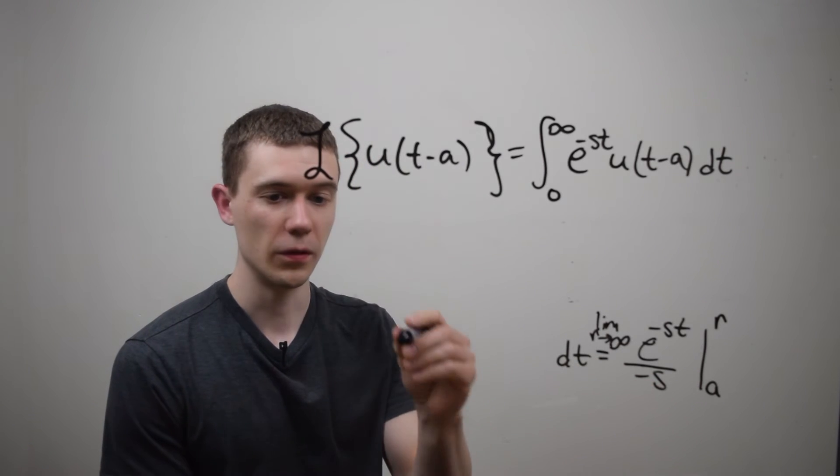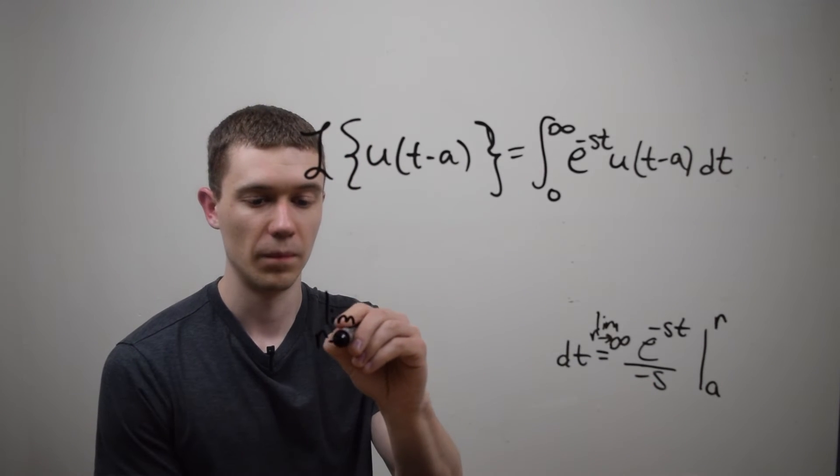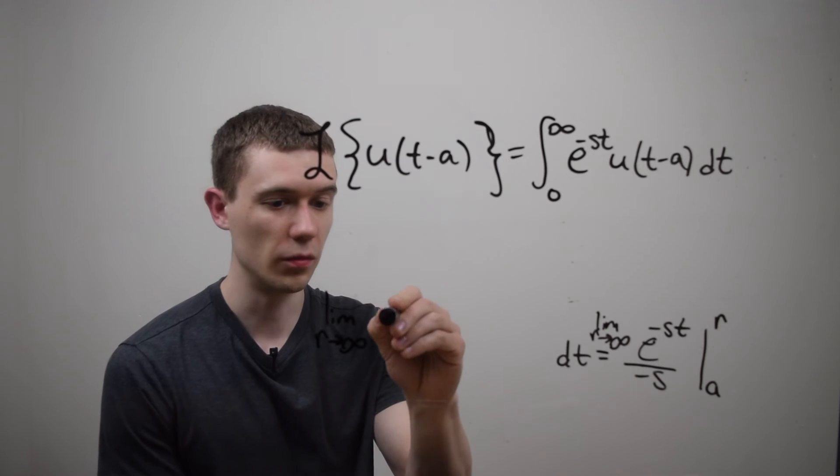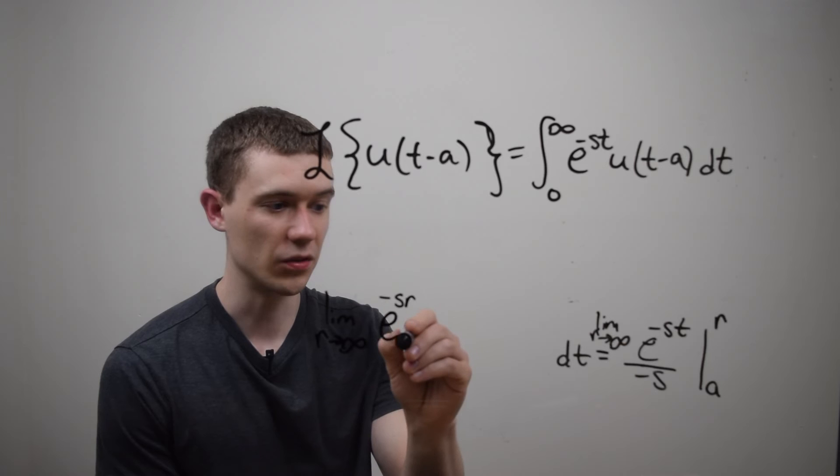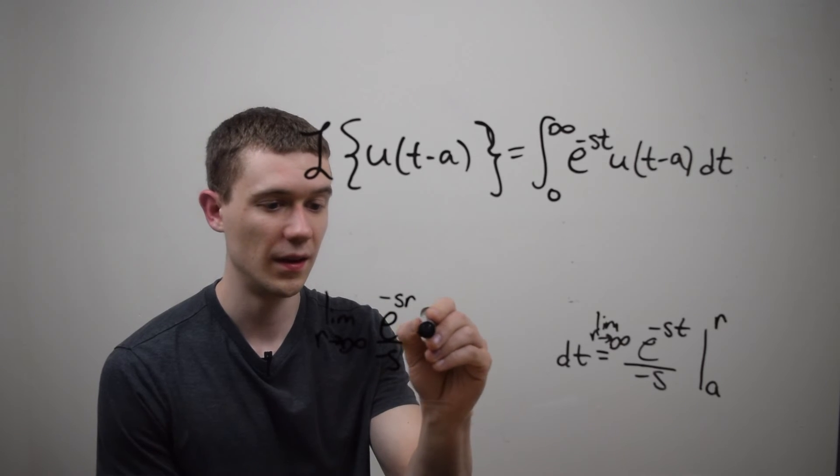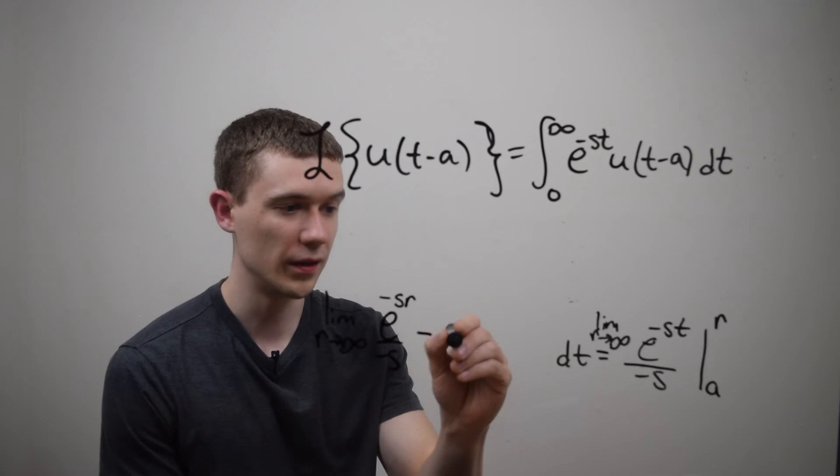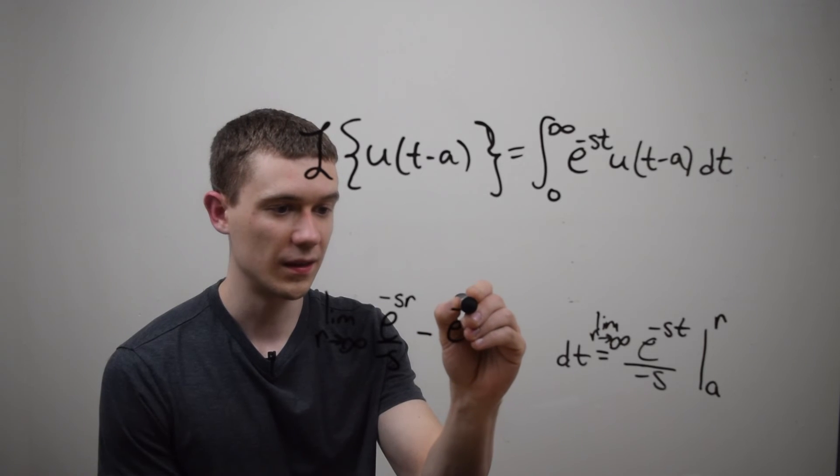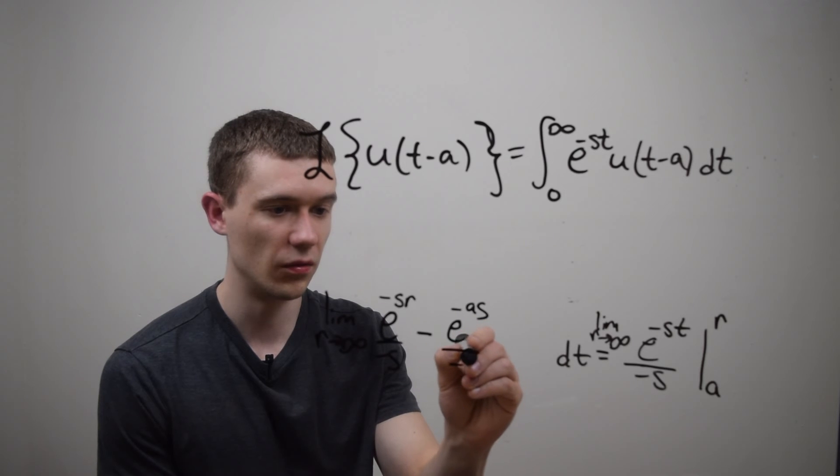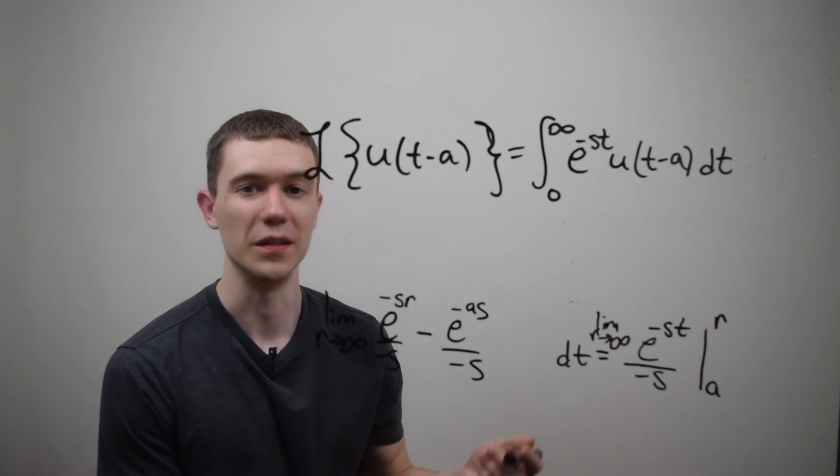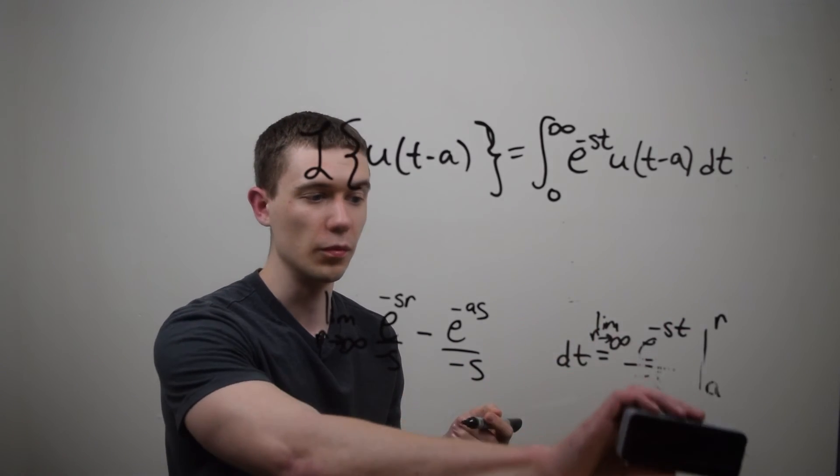Using the fundamental theorem of calculus, this is just plug in the upper limit. So this is e to the minus sr over minus s minus plug in the lower limit. So that would be e to the minus as over minus s. I just flipped those just because that's how you see it in the table of Laplace transforms.